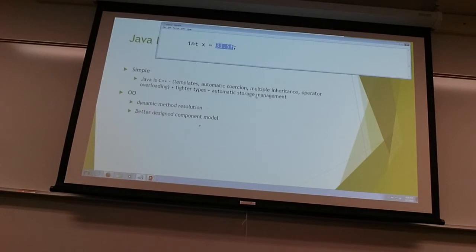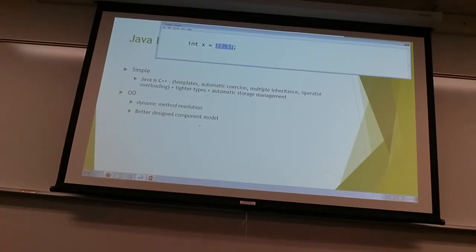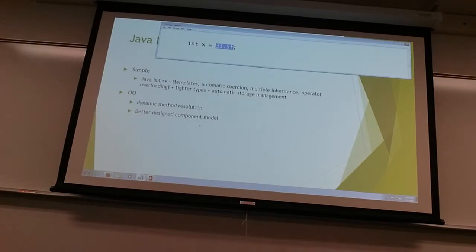Automatic storage management — this is automated memory management. In C++, you can allocate memory on a per-need basis; you write statements in your program to allocate and deallocate memory. In Java, you don't do that. Java takes care of it automatically. Simpler.